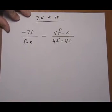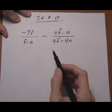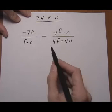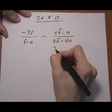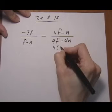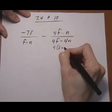So the first step is going to be factor the denominators so that we can see what different factors they're made up of, and then we can find the LCD. The second denominator factors as four times F take away N.